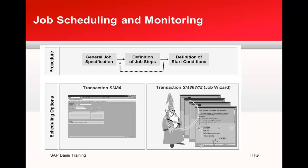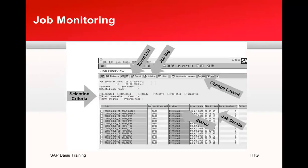From a monitoring perspective, there is a transaction called SM37. We'll log into both SM36 and SM37 to see how they work. Before that, I just want to cover this theory part. In the SM37 interface you can find out which job is running at what time, what the status of a job is, how many jobs are running, and all that information.